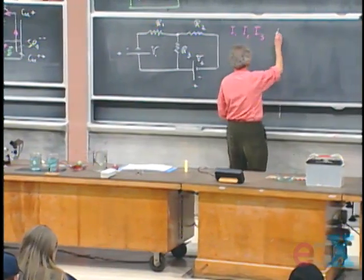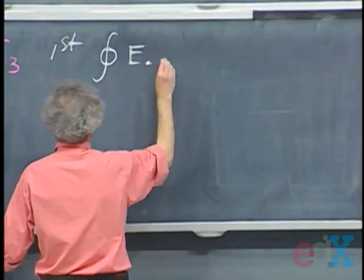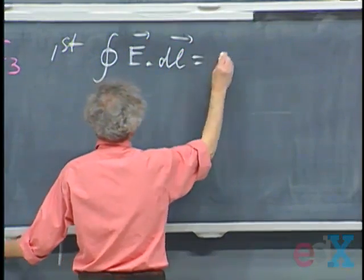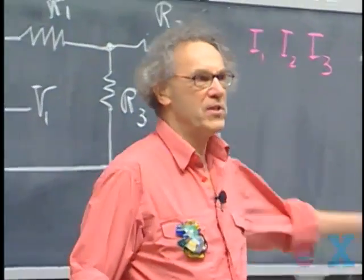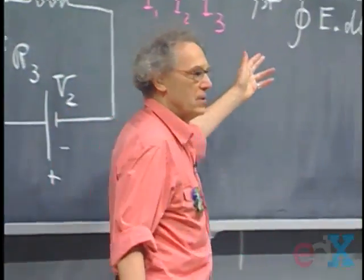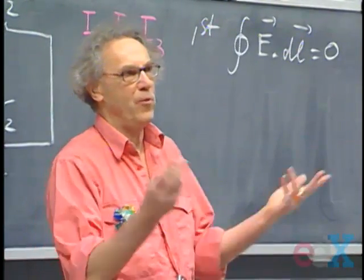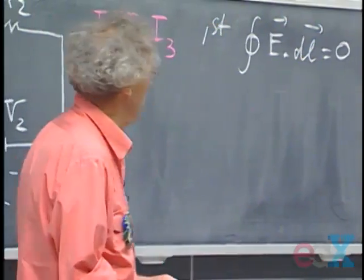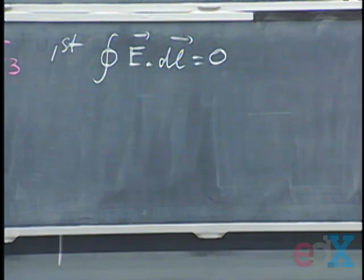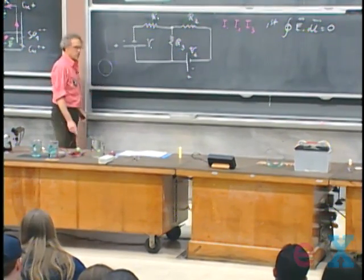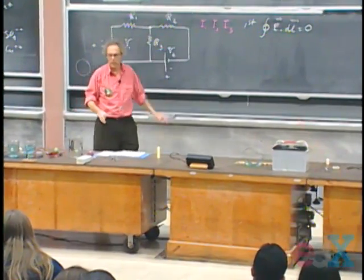The basic idea behind solving these problems is Kirchhoff's Rules. Kirchhoff's first rule is that the closed-loop integral of E·dl is zero — this is always the case when dealing with conservative fields. When you start at a particular point, go around, and return, you're back at the same potential, so this must be zero. His second rule is charge conservation: in a steady-state situation, at any junction the current that flows in must flow out — there can be no pileup of charge.